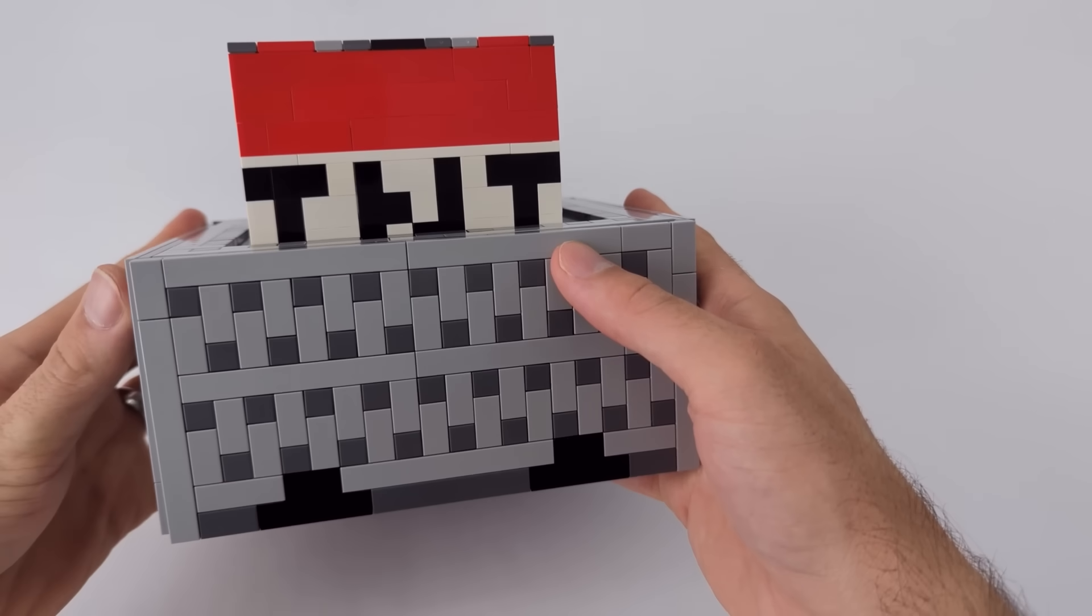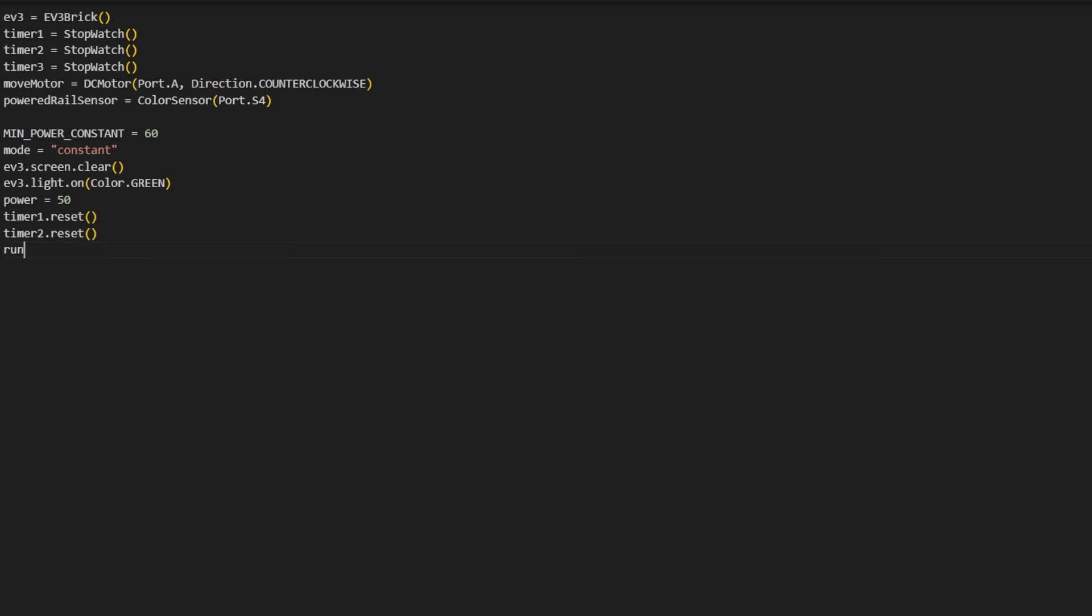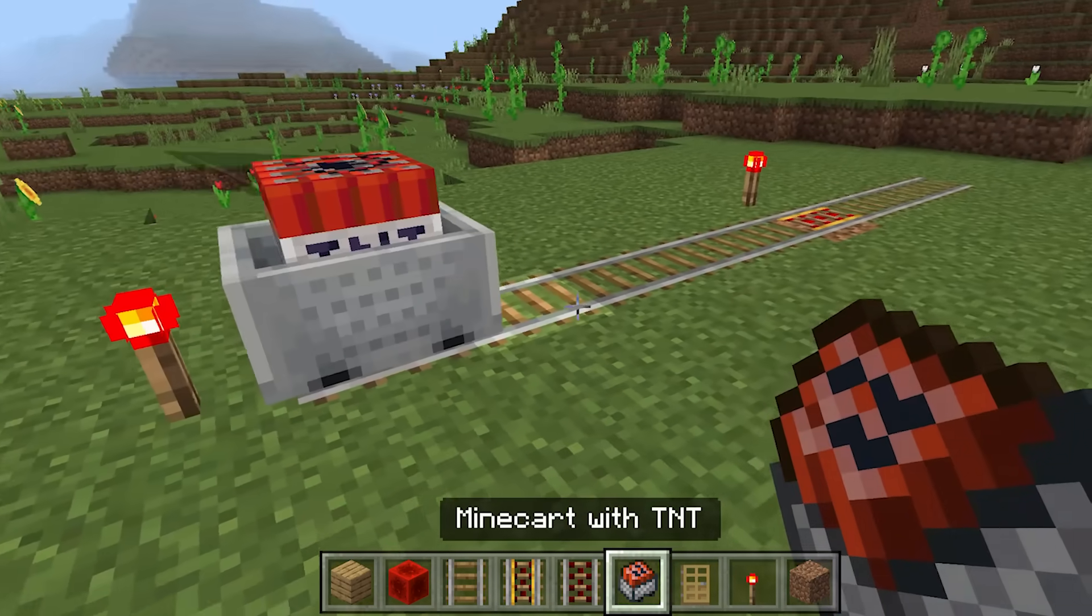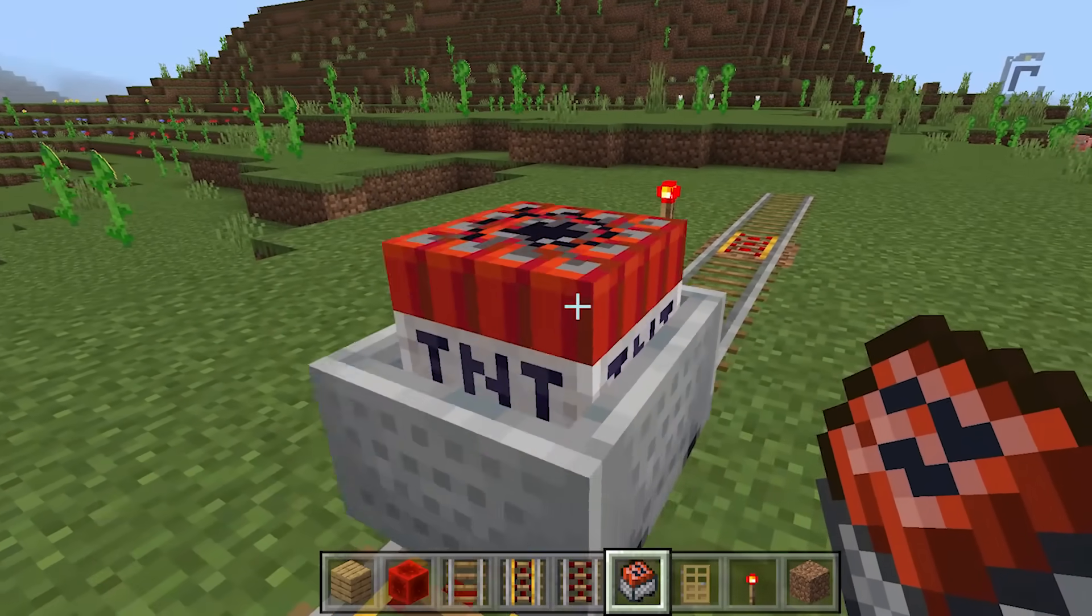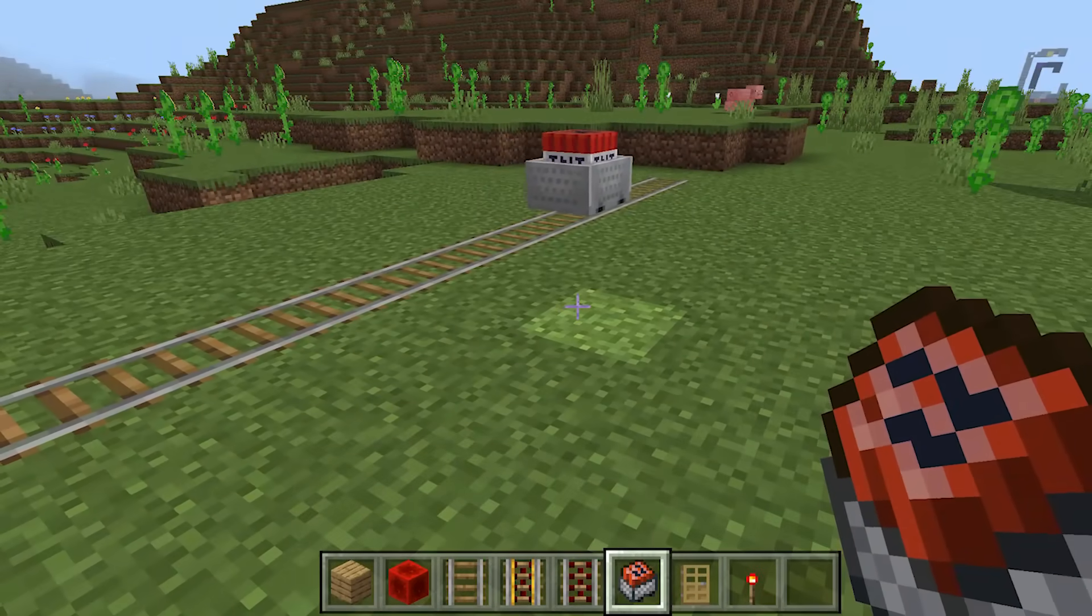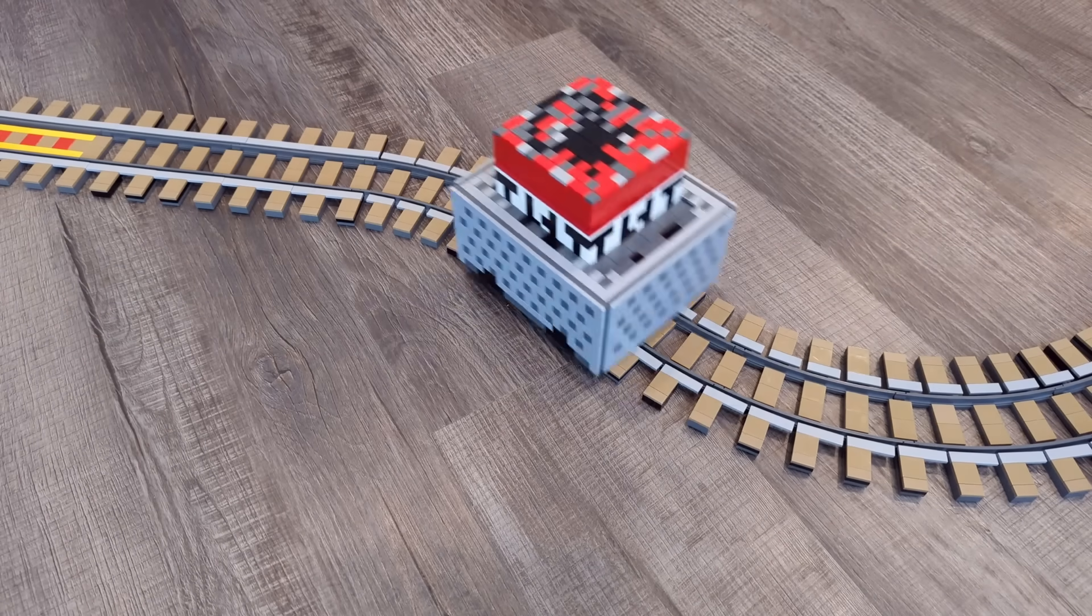Now I just need to program this to act like a minecart. We'll put some code here, a little code there, and done. So I need to make sure this behaves correctly on both powered and normal rails. Normal behavior looks like this. When going over a powered rail, the minecart will accelerate, but without enough powered rails the minecart will eventually stop. So let's see how this LEGO minecart handles it.